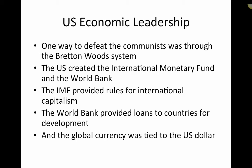We tried to defeat the communists through a new economic system called the Bretton Woods system. At Bretton Woods in New Hampshire, the United States created two major international institutions: the International Monetary Fund and the World Bank. The IMF provides rules for international capitalism — basically telling countries they can get loans if they industrialize, move people from agricultural areas into urban areas, and fight inflation. If countries do this, the World Bank will provide loans for development.